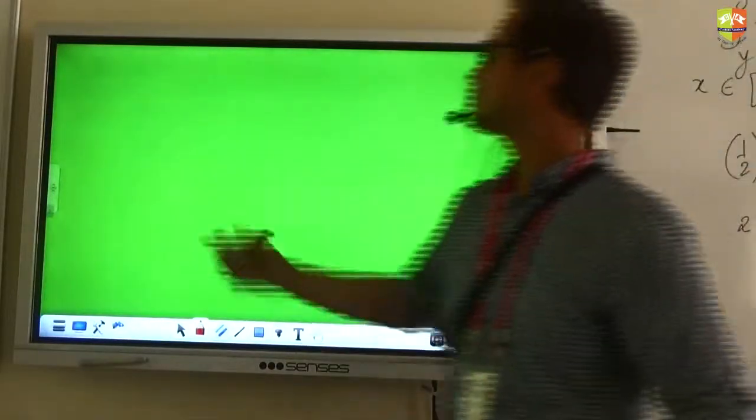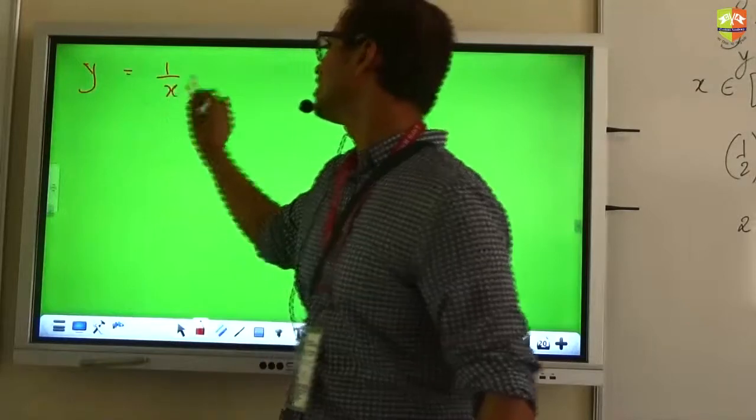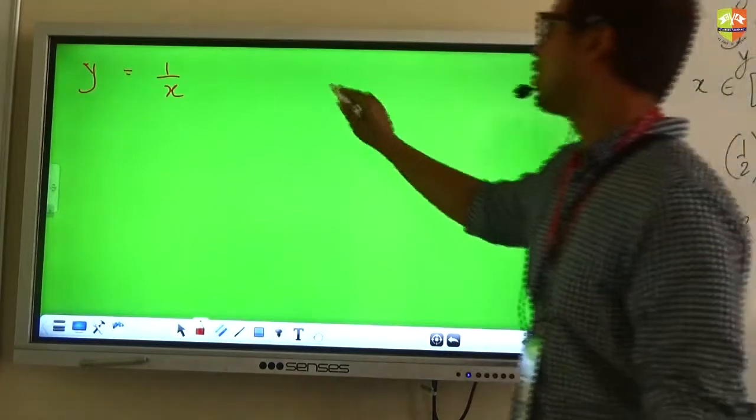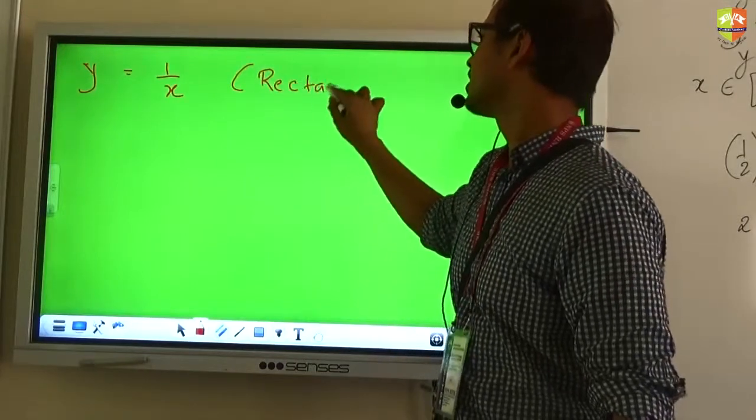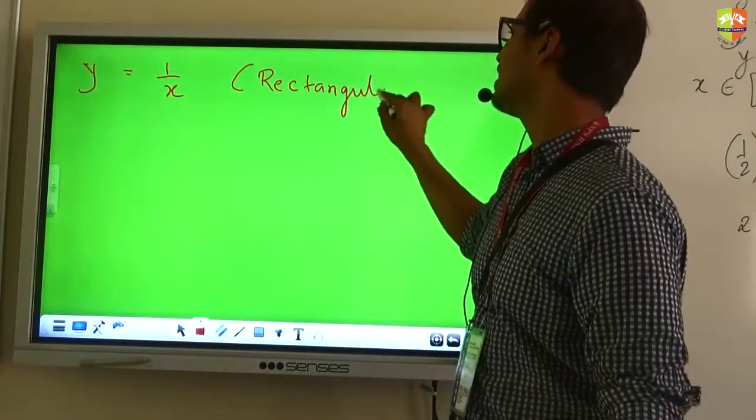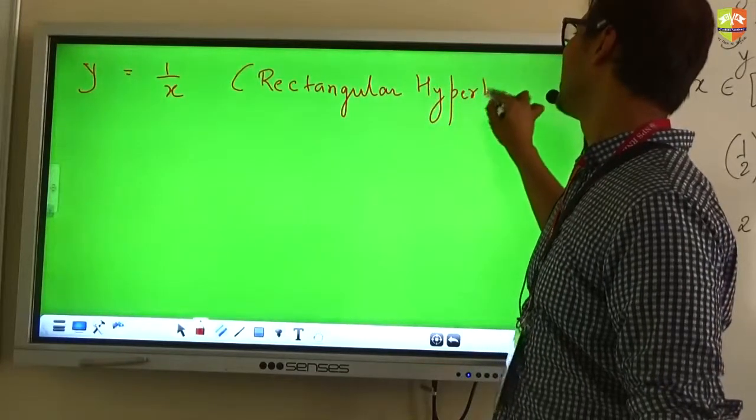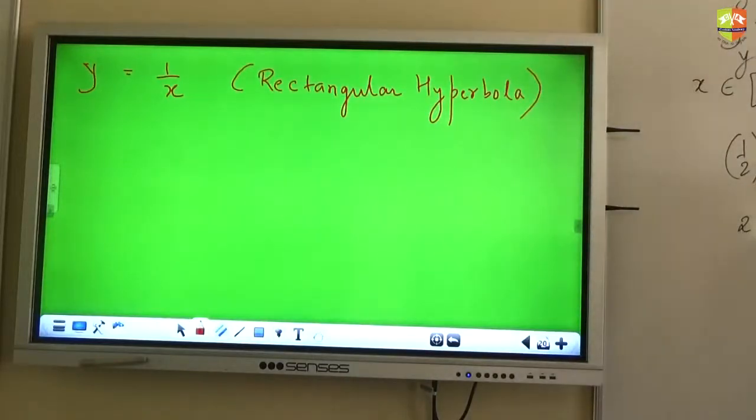to the graph of functions of this nature 1 by x, 1 by x square, 1 by x cube and all. Now y is equal to 1 by x is basically called a rectangular hyperbola. Now what's the hyperbola? No no, it's something that you will study in your conic section chapter so I'm not going to spend too much time talking about it. It's just that